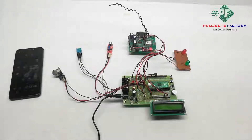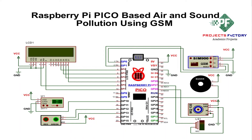The GSM module is connected to GPIO pins 0 and 1. There are two LEDs — one red and one green — connected to GPIO pins 12 and 13. The buzzer is connected to GPIO 22.